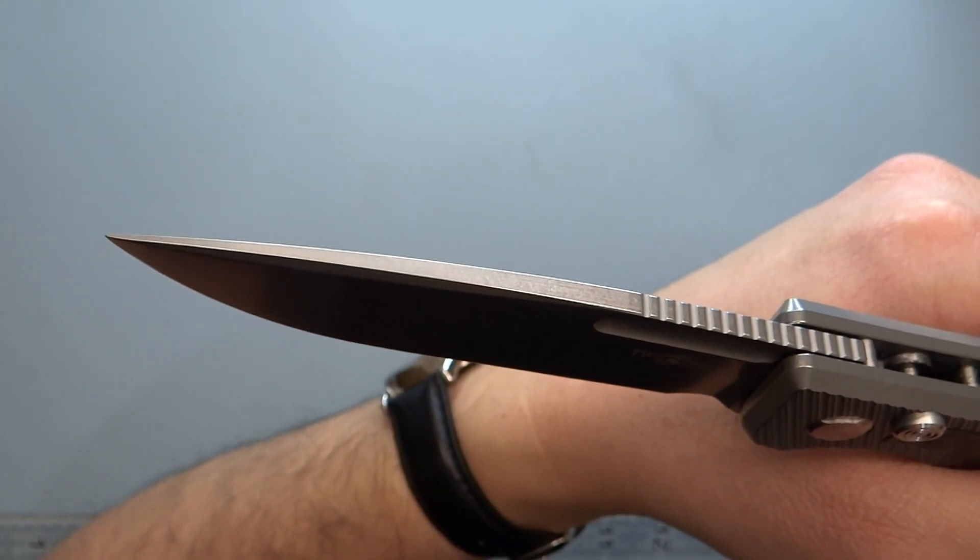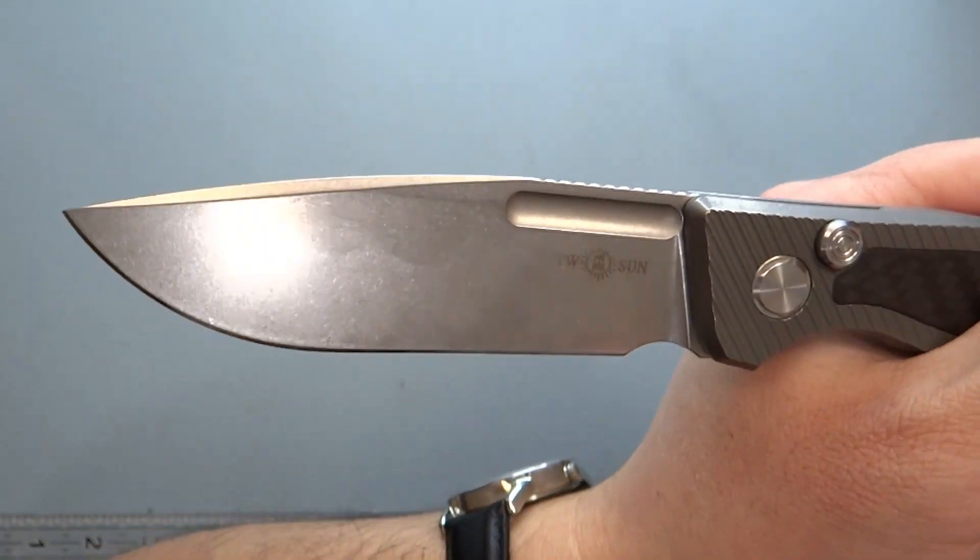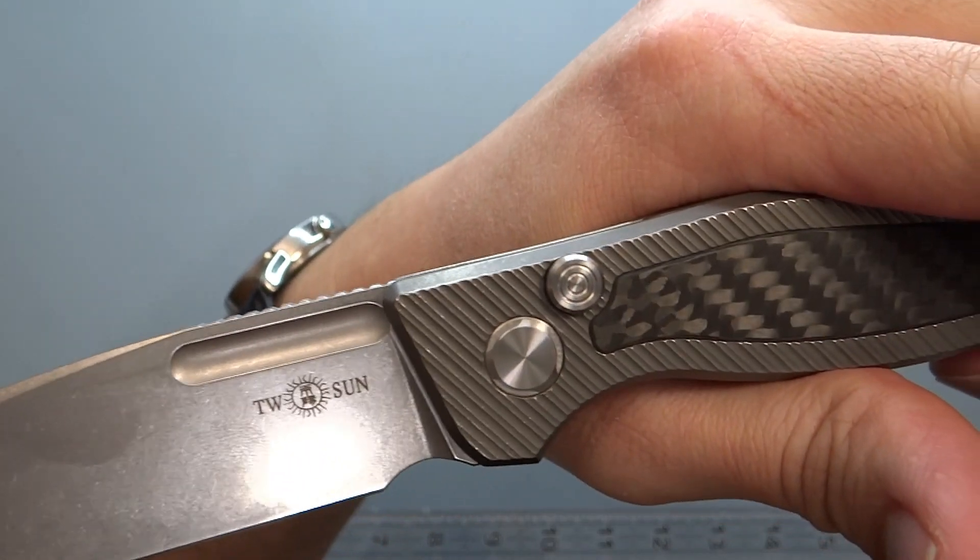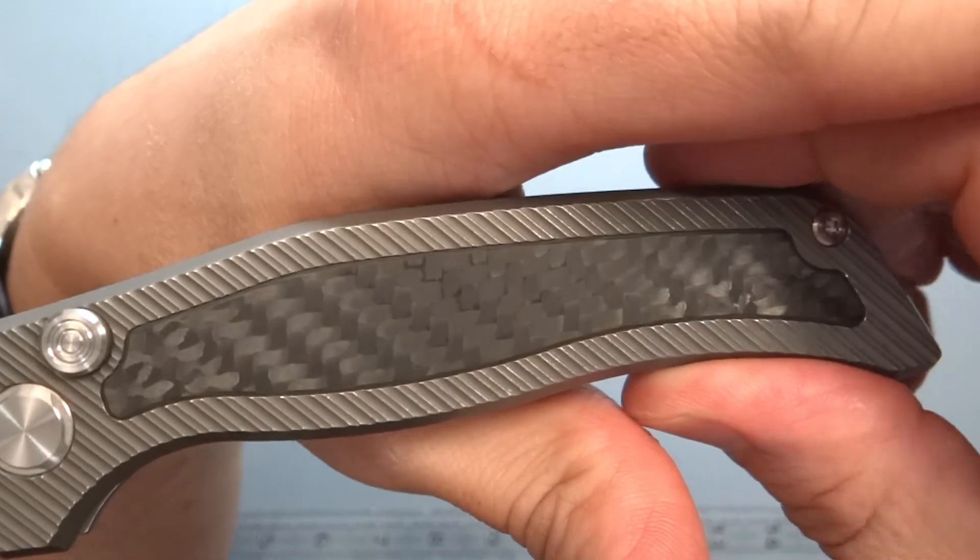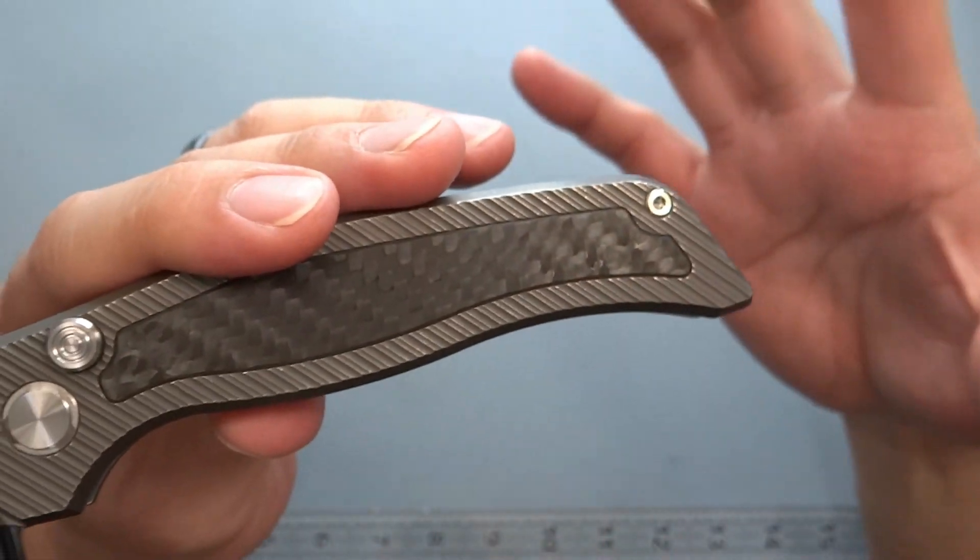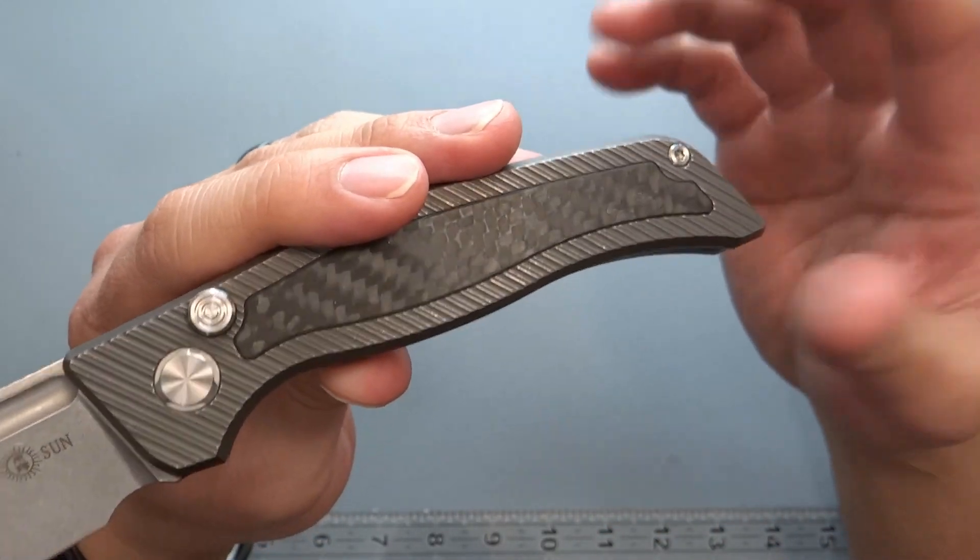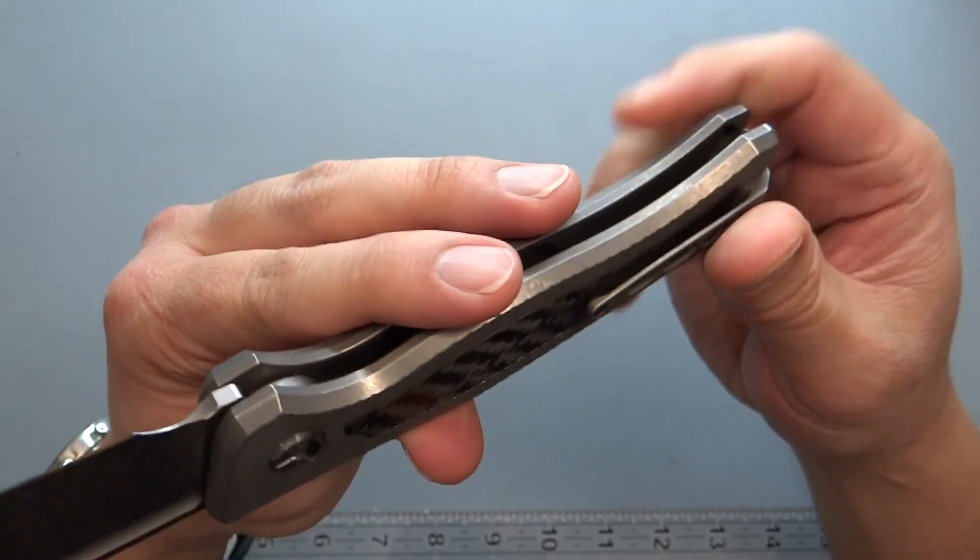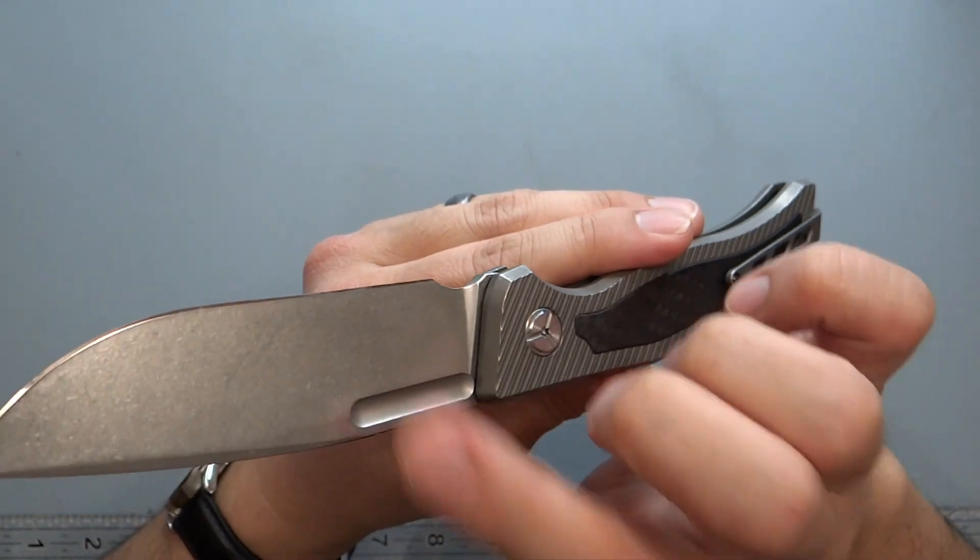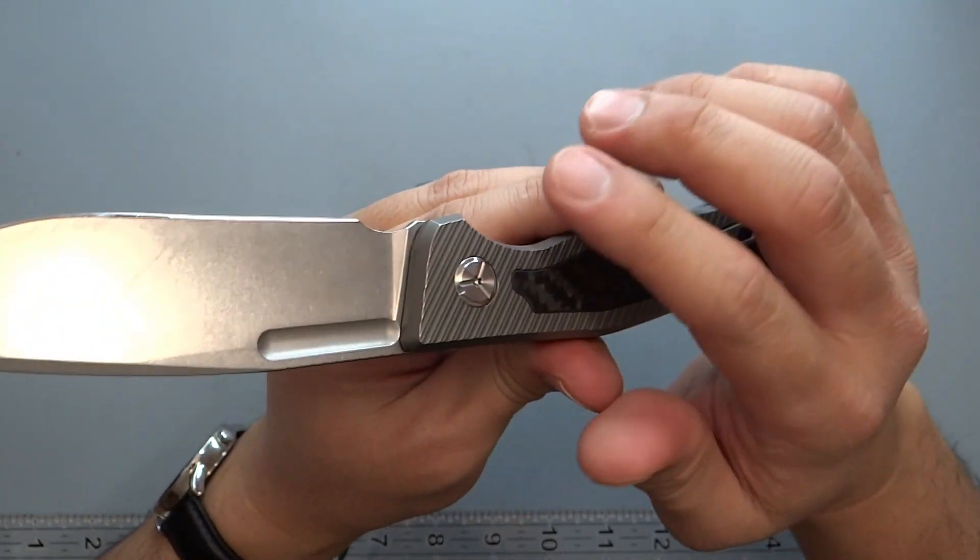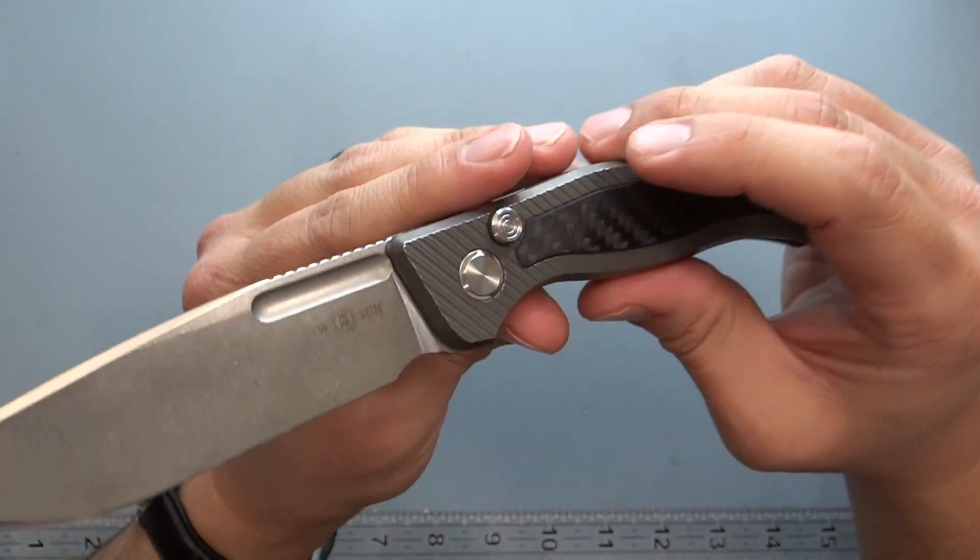3.82 millimeters for the blade stock, about 0.150 inches. For that, 14C28N steel. Using information from Knife Steel Nerds, they use the scientific method with a test blank, heat treating it in controlled conditions. For 14C28N, you're looking at corrosion resistance about 8.5 out of 10, edge retention about 3 out of 10, and toughness about 9 out of 10.